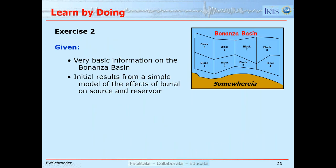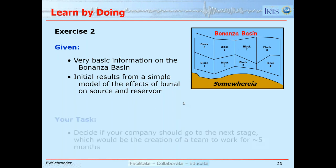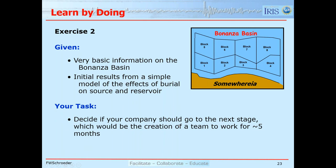Along with lecture two, there's exercise number two available on the website. In this exercise, we have a hypothetical basin — the Bonanza basin — with eight blocks up for bid. The purpose is to figure out which blocks might be of interest to your company. You're given maps about the source, reservoir, trap, and migration, and we assume the seal is perfect everywhere. You're trying to decide if your company should bid on two blocks, four blocks, six blocks, or none of the blocks.